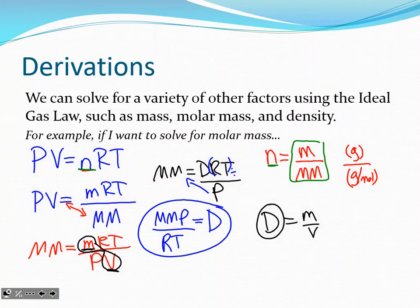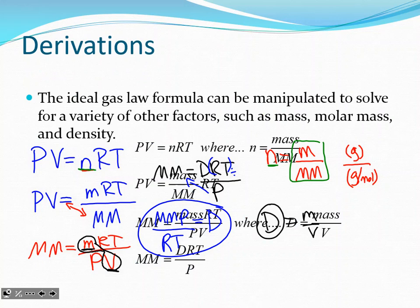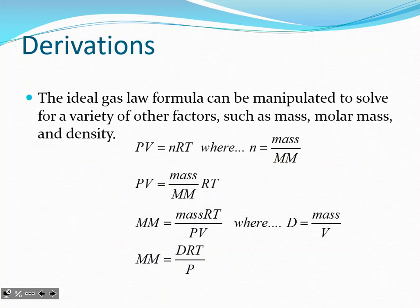Substitution is very important in higher-level science classes. It's cool that we can take the ideal gas equation and manipulate it to solve for other measurements. To recap: substitute moles = mass/molar mass into PV = nRT, then recognize mass/volume equals density, and you get the density form of the equation.